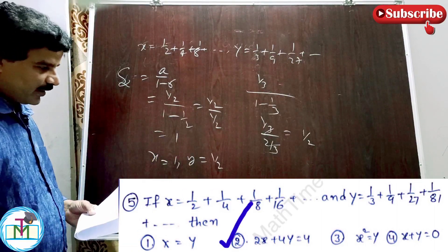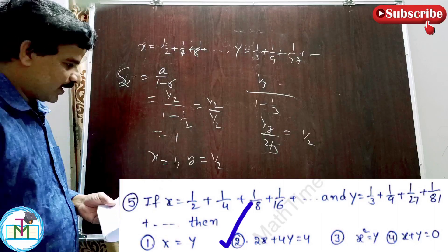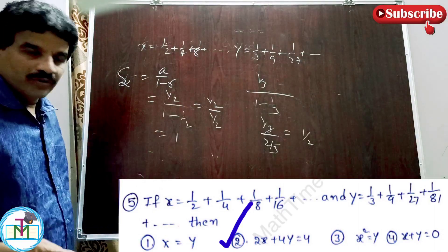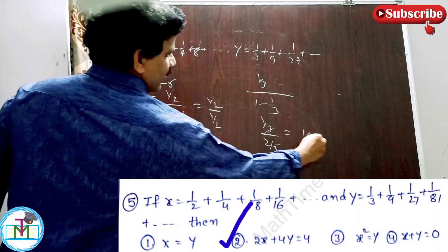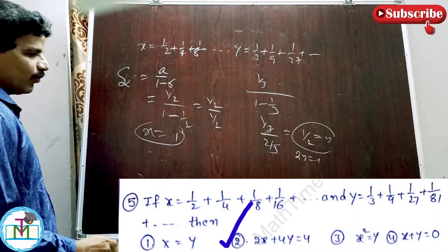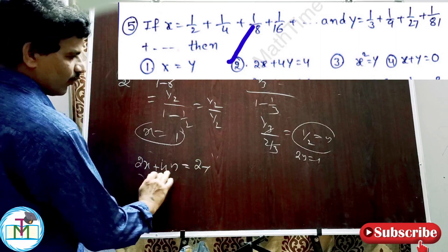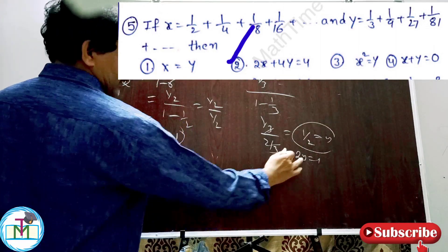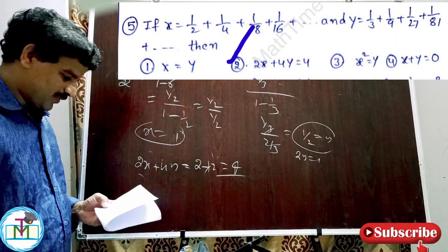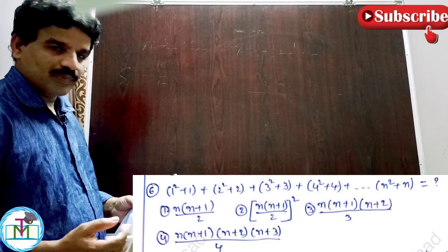So x equals 1 and y equals 1/2. Check the options: option 1, x equals y, is wrong. Option 4, x plus y equals 0, is wrong. Option 3, x squared equals y, is wrong. For option 2: 2x plus 4y equals 2 into 1 plus 4 into 1/2 equals 2 plus 2 equals 4. Option 2 is the right answer.